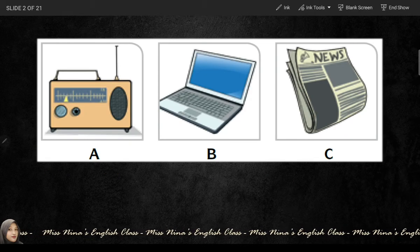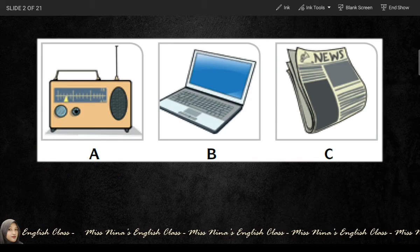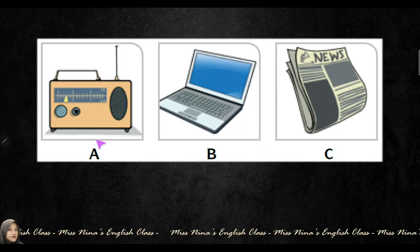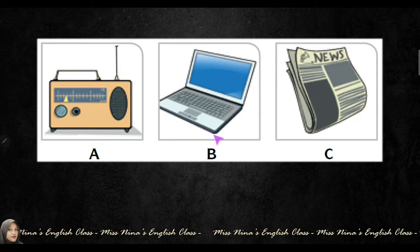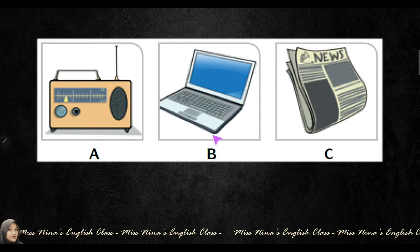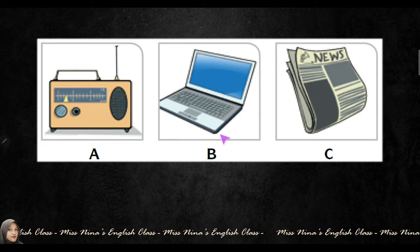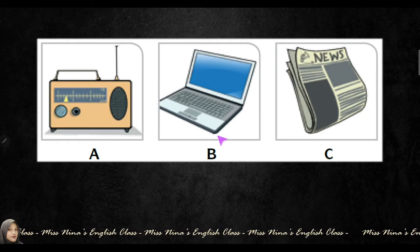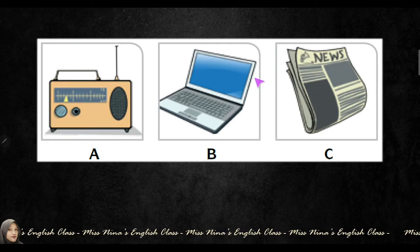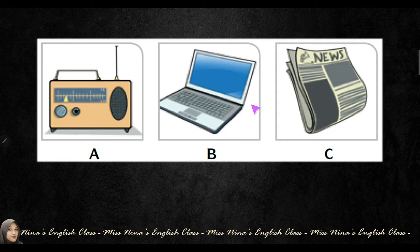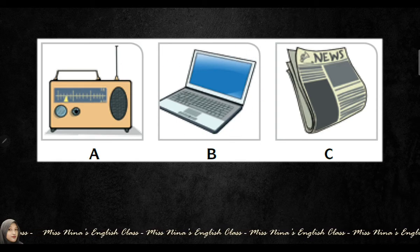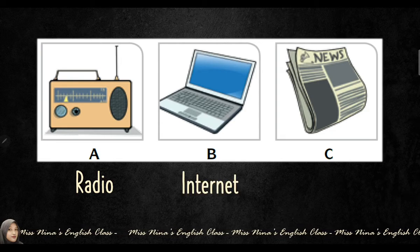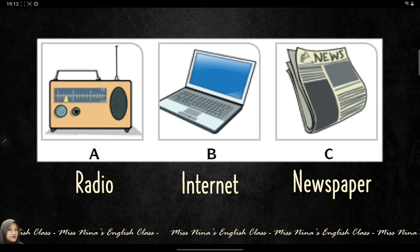Take a look at these three pictures: A, B and C. A is the picture of a radio. B looks like a laptop. However, please remember, our topic today is not devices — our topic today is the media. So what is the possible media that you can find using the internet? And the last one is very easy — it is a newspaper.